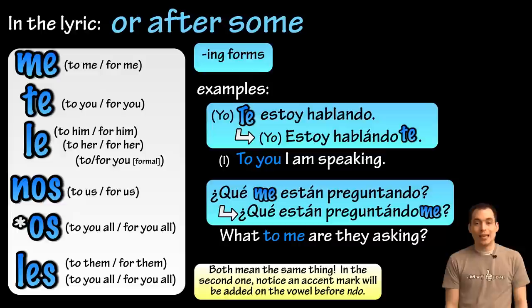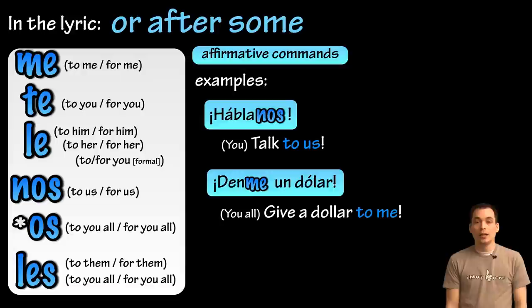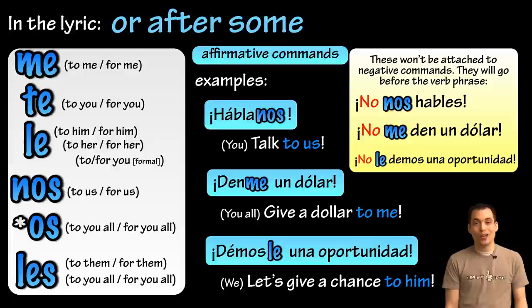Or we could attach these to the end of affirmative commands. Some examples: 'háblanos' — talk to us; 'denme un dólar' — give a dollar to me; 'démosle una oportunidad' — let's give a chance to him. Now we only attach these to the end of affirmative commands. If it's a negative command, we put it at the beginning of the verb phrase as usual. So 'háblanos' becomes 'no nos hables'; 'denme un dólar' becomes 'no me den un dólar'; 'démosle una oportunidad' becomes 'no le demos una oportunidad.'